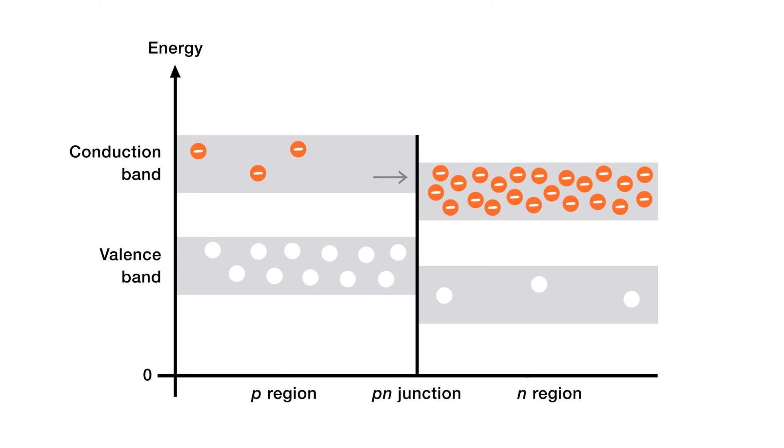In this case, the free electrons in the upper part of the conduction in the n-region can easily diffuse across the p-n junction and temporarily become free electrons in the lower part of the p-region conduction band. Temporary because, after crossing the p-n junction, these free electrons rapidly lose energy and fall into the holes in the valence band of the p-region.